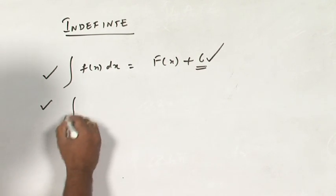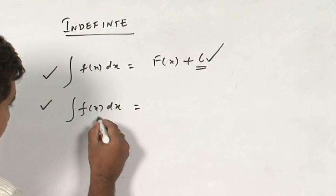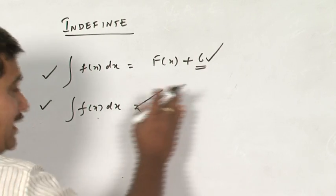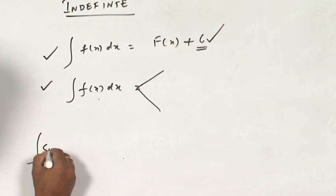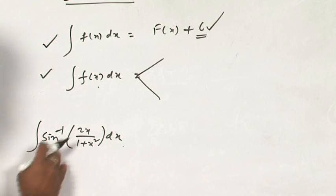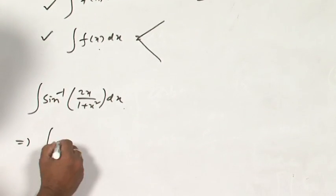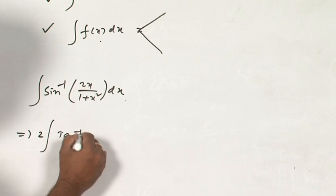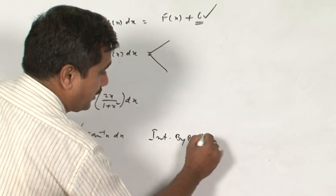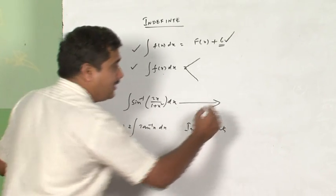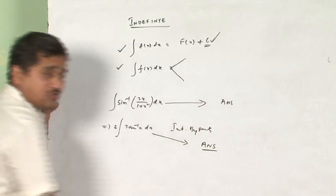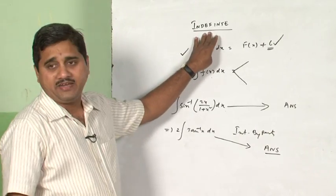The second point is that whenever you integrate a function, this integration can be carried out in multiple fashions. Say for example, integration sine inverse 2x upon 1 plus x square dx. This problem either you can directly work out or change this into tan inverse 2 tan inverse x dx and then apply integration by parts. But when you follow this direct method, you will get some answer and that answer will be different to the answer that you are going to get here. Why? It is mainly because it is indefinite integral.